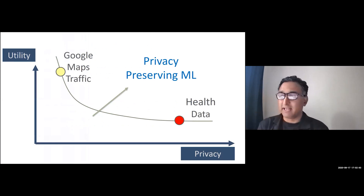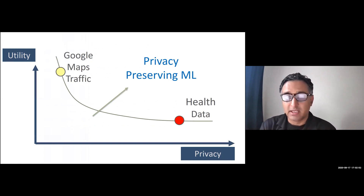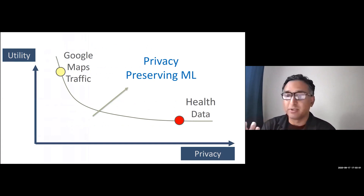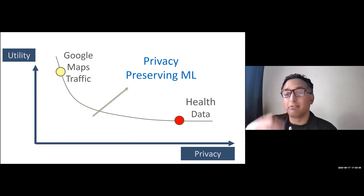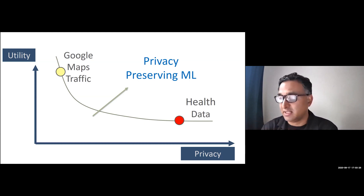This is the challenge we have. On one hand, there's a privacy-utility tradeoff: for Google Maps, we willingly give away our location to Google so it can calculate traffic and show us real-time red and green spots — great utility, no privacy. For health data, we don't give it away, so it stays in silos and we get very little utility. The goal for privacy-preserving machine learning is to have privacy and utility at the same time.